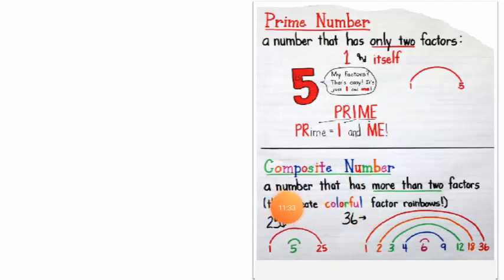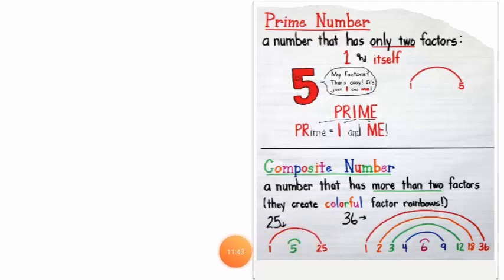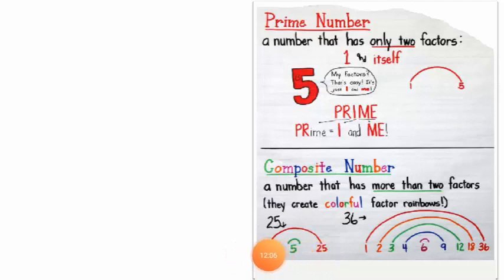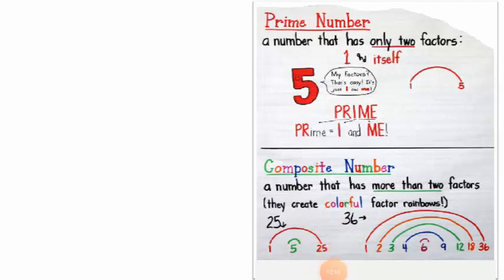Numbers that have more than two factors are not prime. For example, take twenty-five: one multiplied with twenty-five gives twenty-five, and five multiplied with five also gives twenty-five. So the factors of twenty-five are one, five, and twenty-five — that means there are more than two factors. Such numbers are placed under the group of composite numbers.